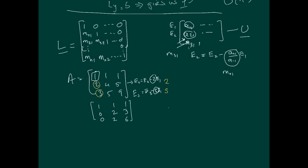Moving further, we need to eliminate the next element. The pivot is 2, so E3 equals E3 minus E2. The multiple M32 is 1. The matrix then becomes: row 1 is 1, 1, 1; row 2 is 0, 2, 3; row 3 is 0, 0, 3. So our three multiples are M21 equals 2, M31 equals 3, and M32 equals 1.